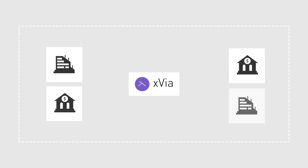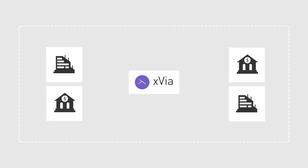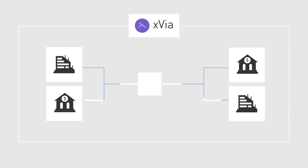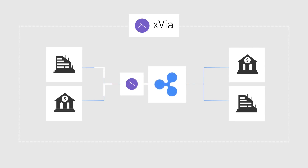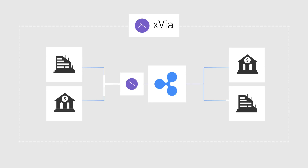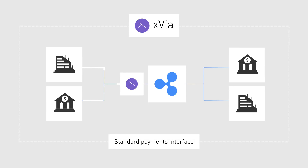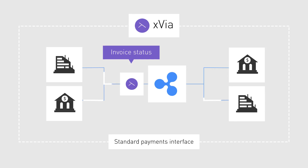Xvia allows payment originators and corporates to send international payments through a financial institute that's been connected to RippleNet using an API-based standardized interface. Payments can be attached with rich information like an invoice or payment status.